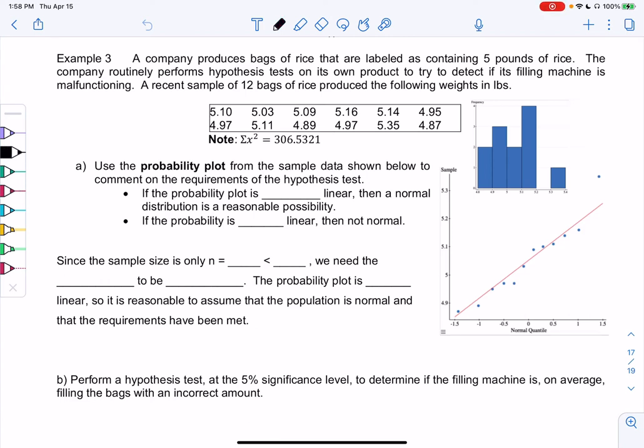Section 9.3, example three. We have a company that produces bags of rice that are labeled as containing five pounds of rice. So this would be their claim, right? The label is what they're claiming is in the bag.